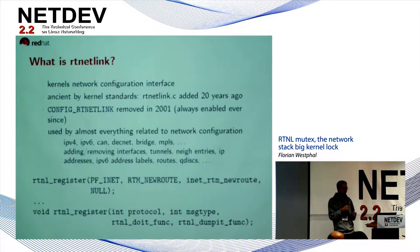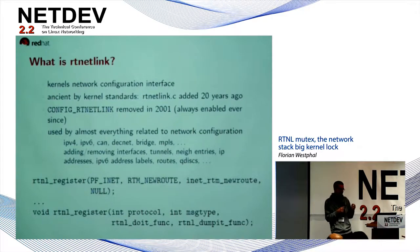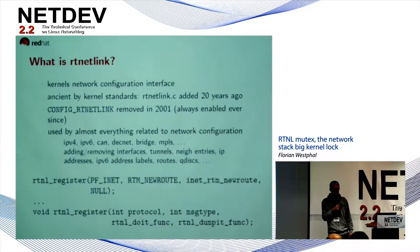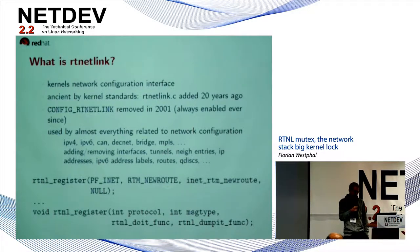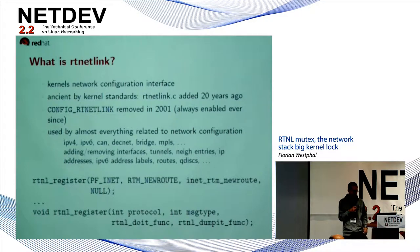RT Netlink is the kernel's interface to user space to configure all things networking, and that's pretty ancient by kernel standards — it was added more than 20 years ago. You can't even build a kernel without RT Netlink unless you elide the entire network stack completely. So if you configure an IPv4 address or IPv6 address, or bring up or down tunnels, you always involve RT Netlink at one point.